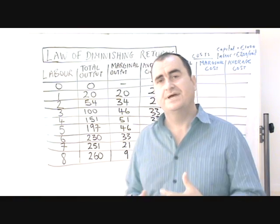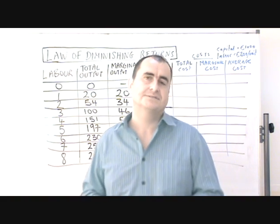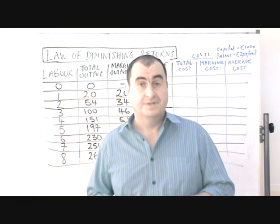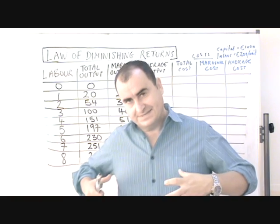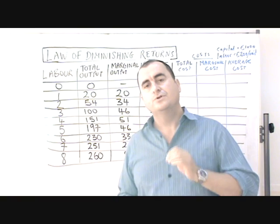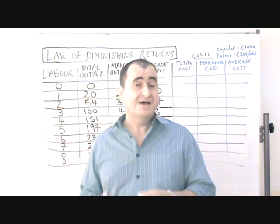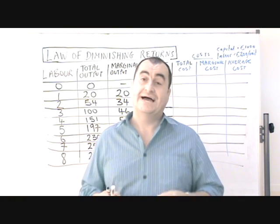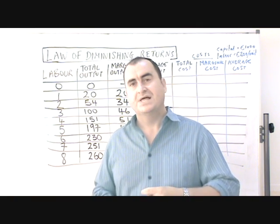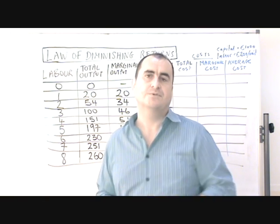I want to define and explain the law of diminishing returns and then work through some numbers to show you the impact of diminishing returns on costs for a firm, and to show why firms have to accept they need to change all the factors of production and move into the long term. The law of diminishing returns states that when more and more variable factors of production are added to a fixed quantity of another factor of production, eventually less extra will be produced with the addition of a unit of the variable factor of production.